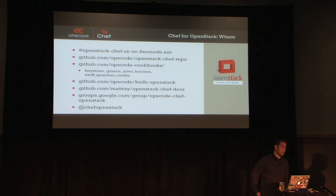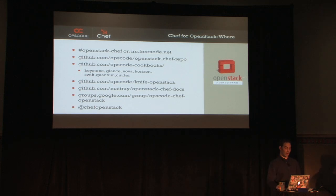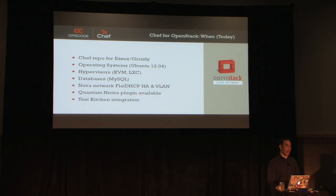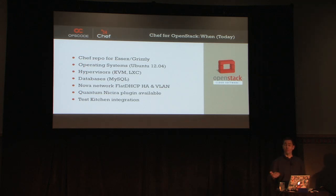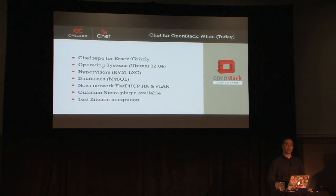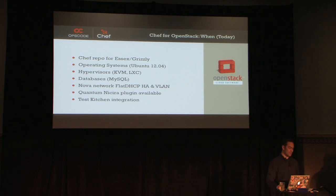We have an IRC channel, code on GitHub, lots of forks on GitHub, a Google group, and a Twitter handle. What is there today? We have a Chef repo currently for Essex. Grizzly is done and I have pull requests to get Grizzly in — Folsom will probably get backfilled too. Currently it's Ubuntu 12.04, with KVM and LXC, MySQL, and still using Nova Network. There is a Nicira plugin for Quantum from AT&T, and it integrates into Test Kitchen, our test framework.